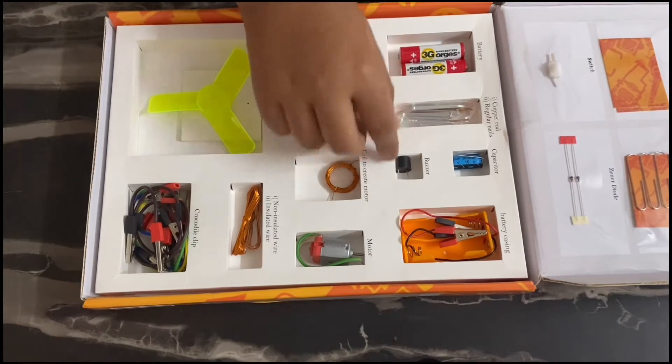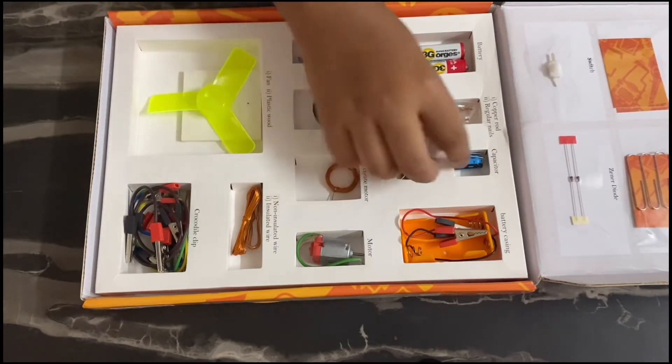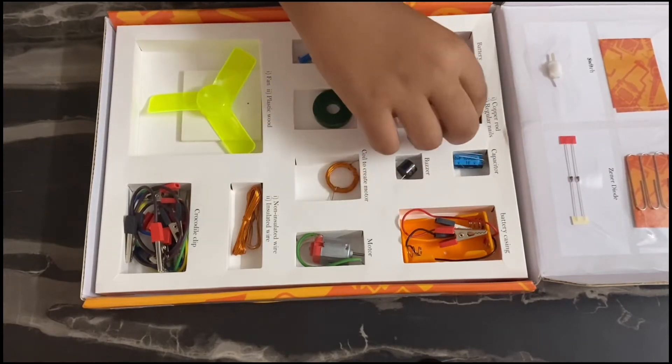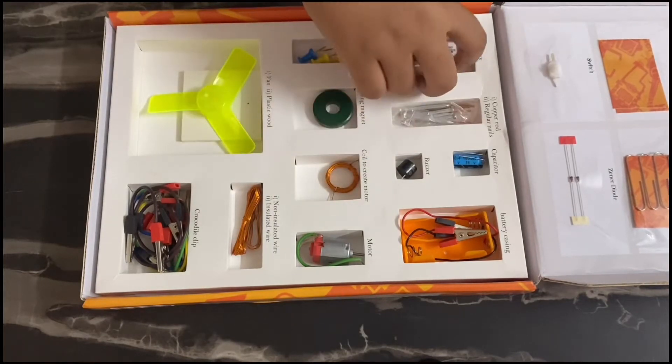Down in the box, you will get a battery casing, a buzzer, a capacitor, copper rod and regular nails, and two batteries.